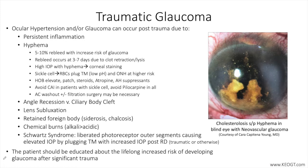Steroid use must be closely supervised to avoid steroid-related IOP spikes that can in itself cause glaucomatous optic neuropathy. Extensive synechiae formation may necessitate goniosynechialysis once inflammation is controlled to allow for egress of aqueous humor out of the eye. Other surgical procedures may also be necessary depending on the stage and severity of disease.